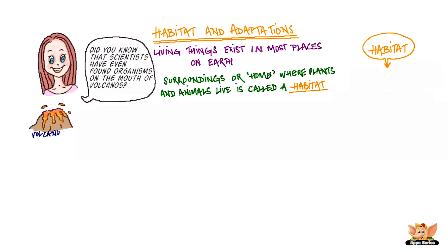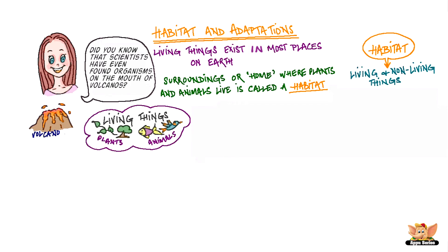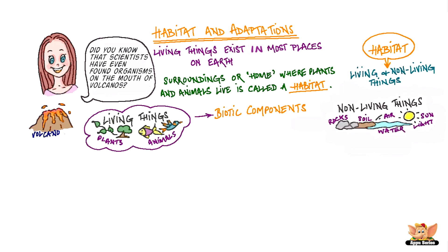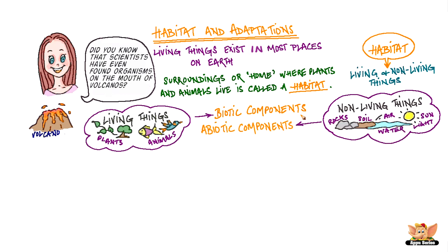A habitat is made up of both living and non-living things. The living things, i.e. plants and animals in a habitat, are its biotic components. Non-living things such as rocks, soil, air, water, and even sunlight and heat make up the abiotic components of a habitat.